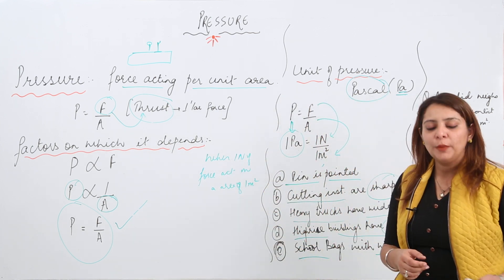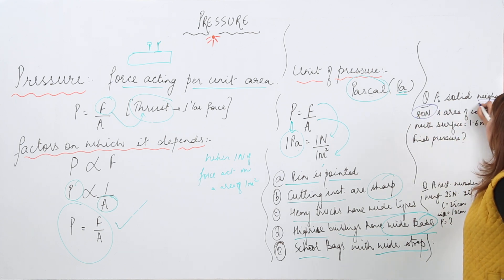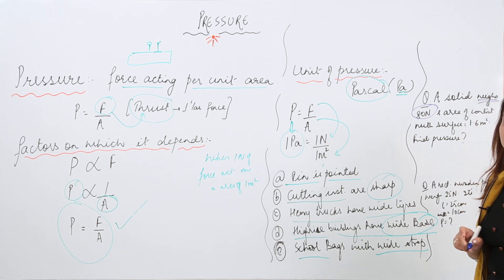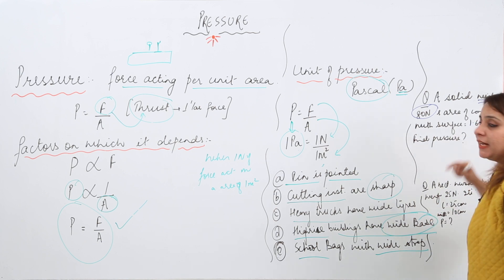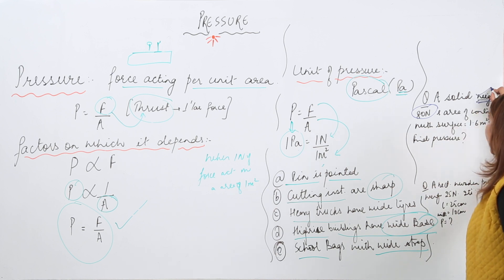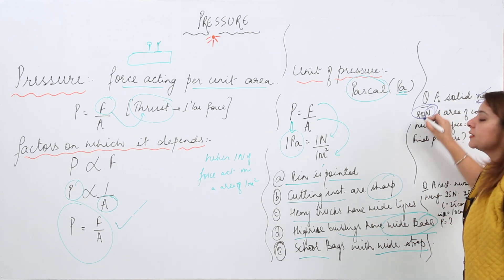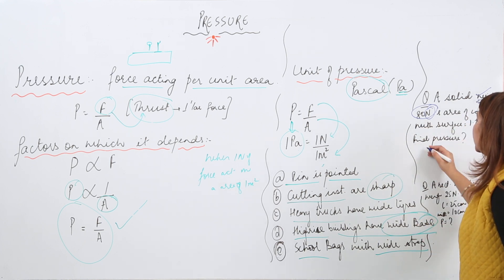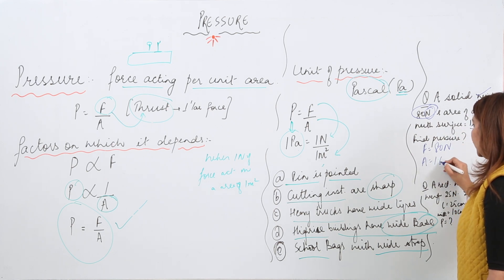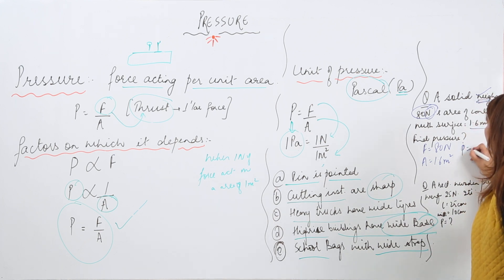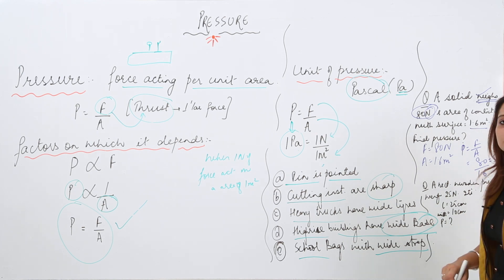Now for a numerical: a solid weighs 80 Newton. Here weight is a force — the force with which the earth attracts the object. The units confirm this: 80 Newton, and Newton is the SI unit of force. The area of contact with the surface is 1.6 meter square. Pressure equals force upon area, so 80 divided by 1.6 gives 50 Newton per meter square, which is 50 Pascal.